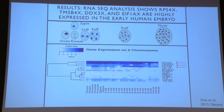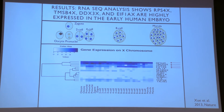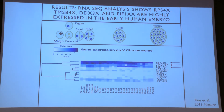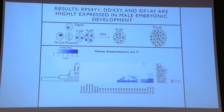The first set of RNA-seq results shows that RPS4X, TMSB4X, DDX3X, and EIF1AX are highly expressed in early human embryos. You can see those are the ones with arrows drawn to them here. The heat maps show they're pretty dark — highly expressed throughout all of embryonic development. These are just X chromosome genes.